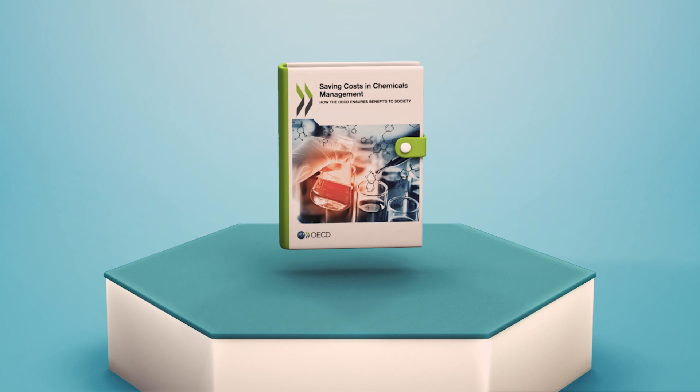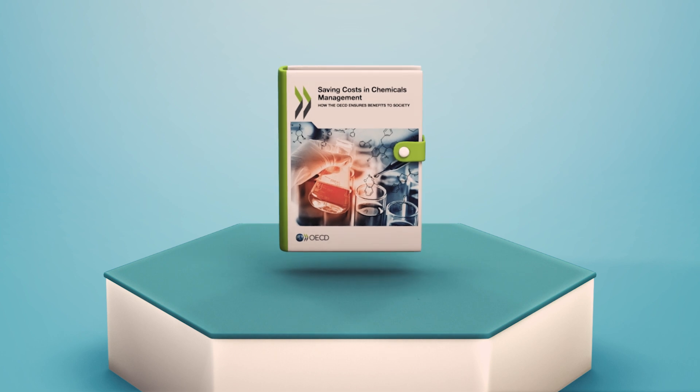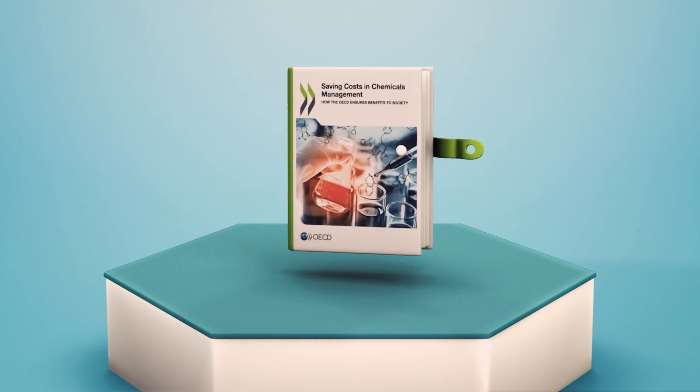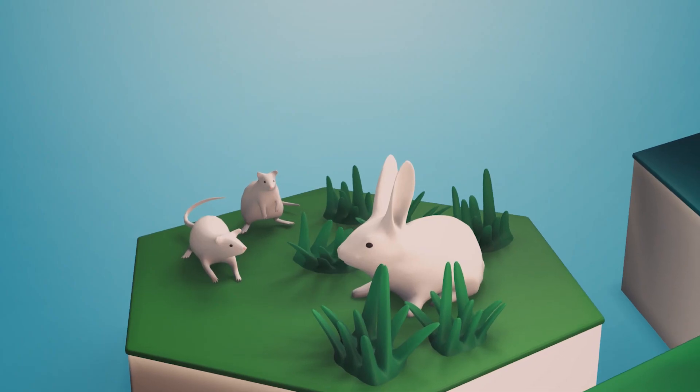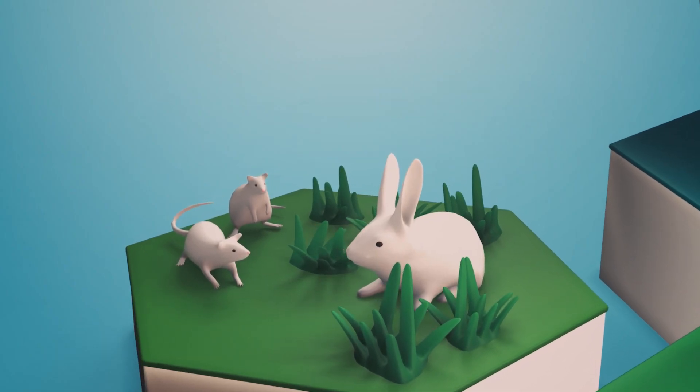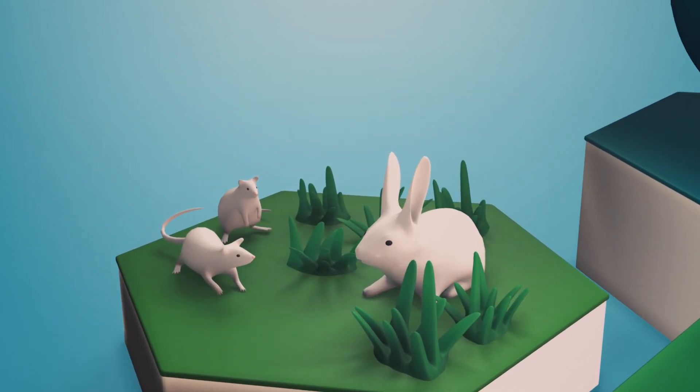The new report, Saving Costs in Chemicals Management, estimates that this system and other OECD tools save society more than 309 million euros every year. And by reducing duplicative testing, tens of thousands of animal lives are saved.